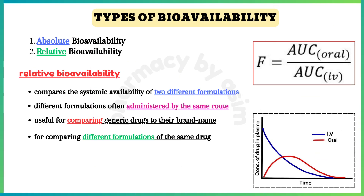Number two is relative bioavailability. Relative bioavailability compares the systemic availability of two different formulations or products of the same drug, often administered by the same route. It is useful for comparing generic drugs to their brand name counterparts or for comparing different formulations of the same drug.